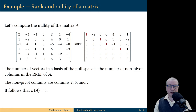And it means that the basis of the null space of A includes exactly three vectors. Therefore, the dimension of the null space of the matrix A is equal to 3. This tells us that the nullity of the matrix A is 3, and we just proved that it is equal to the number of non-pivot columns in the reduced row echelon form of the matrix.